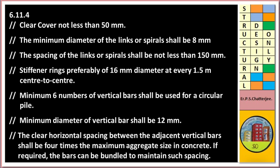Stiffening rings, preferably 16 mm diameter at every 1.5 m centre to centre. Minimum 6 vertical bars shall be used for circular spiral piles. Minimum diameter of vertical bars shall be 12 mm. Clear horizontal spacing between two adjacent vertical bars shall be 4 times the maximum aggregate size in concrete. If required, bars can be bundled to maintain such spacing.